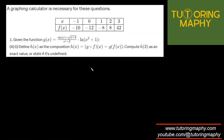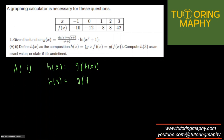We'll give an exact value and an approximation as well. For part A1, h(x) = g(f(x)). Since I need h(3), I replace x with 3. For f(3), I take the help of the table — at x = 3, the value is 42. So now I'm interested in finding g(42).